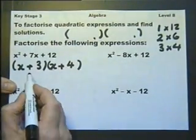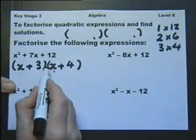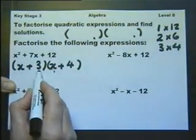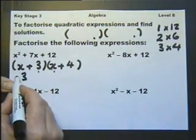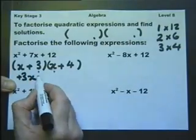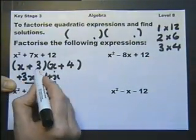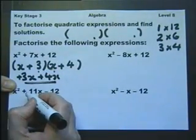It's always worth checking these and multiplying back just to make sure you've done it right. x times x is x². Plus 3 times x is plus 3x. Plus 4 times x is plus 4x. Yes, we've got the 7x there. And then lastly, plus 3 times plus 4 is the plus 12.